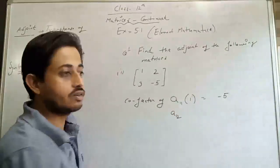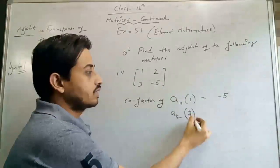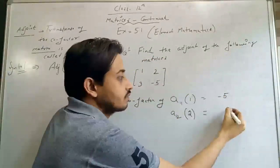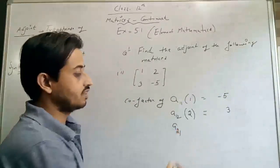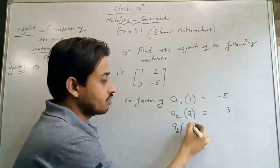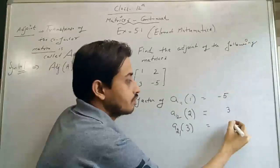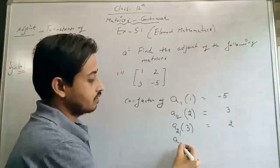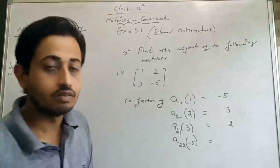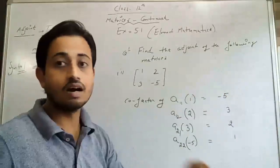Now we have to calculate the cofactor of A12, which is first row and second column — finding the cofactor for element 2. If we cut this column and this row, we get element 3. Now we find the cofactor of A21, which is second row and first column — finding the cofactor of element 3. If we cut this row and column, we get element 2. Similarly, for A22, second row and second column, we get element 1. But these are the minors, not the cofactors yet — we need to apply the sign.